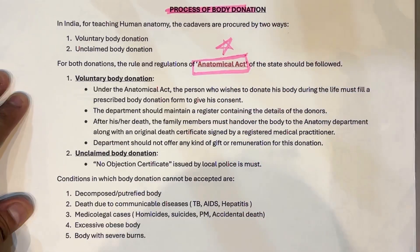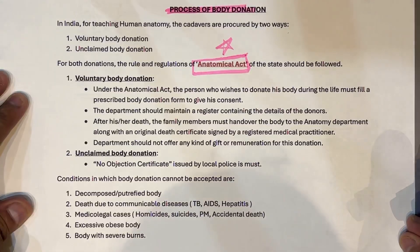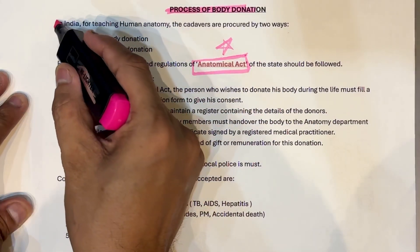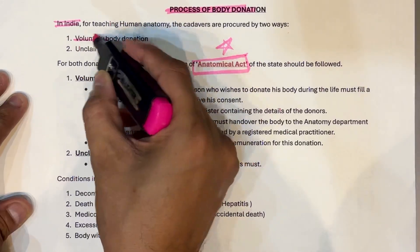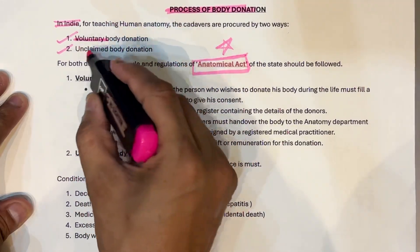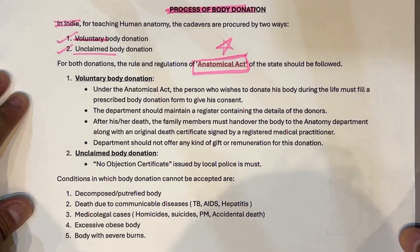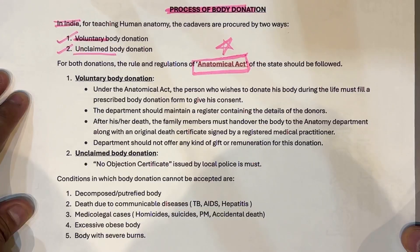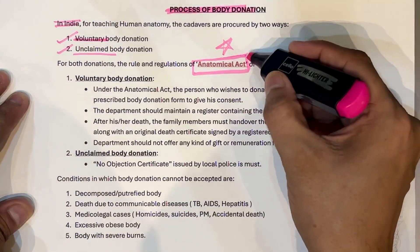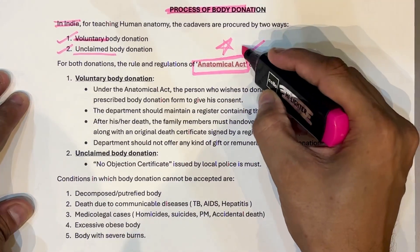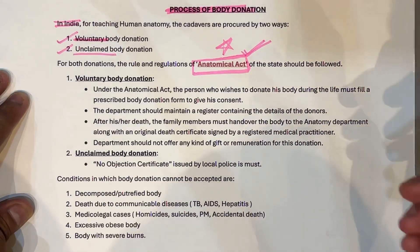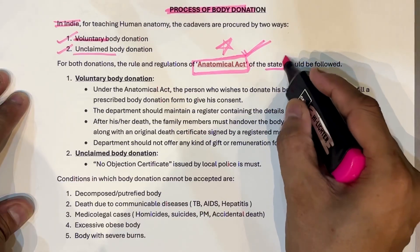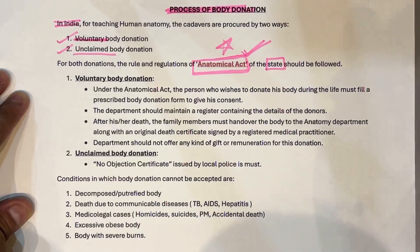In India there are two types of body donation: one is known as voluntary body donation and another is known as unclaimed body donation. Both such donations are regulated by an act known as the Anatomical Act. This word has to be in bold letters when you are writing a short note.